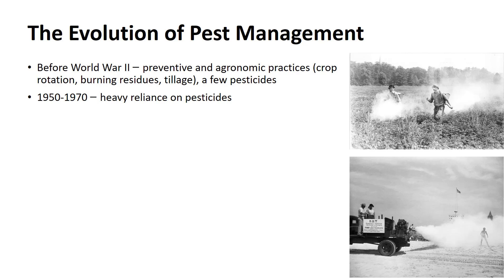Since people began cultivating crops, they have managed pests to increase crop yield, quality, and profitability. Early agronomic practices such as crop rotation, burning crop residues, tillage, and hand removal of pests were often the primary methods of pest control. The first pesticides contained copper, sulfur, lead, organic salts, antimony, and arsenic, and included botanical compounds such as nicotine and pyrethrum. Many of these early materials were quite toxic and expensive, and their use was limited to applications against a few key pests. Equipment to safely handle and effectively apply these materials was not well developed, and control effectiveness was often erratic.